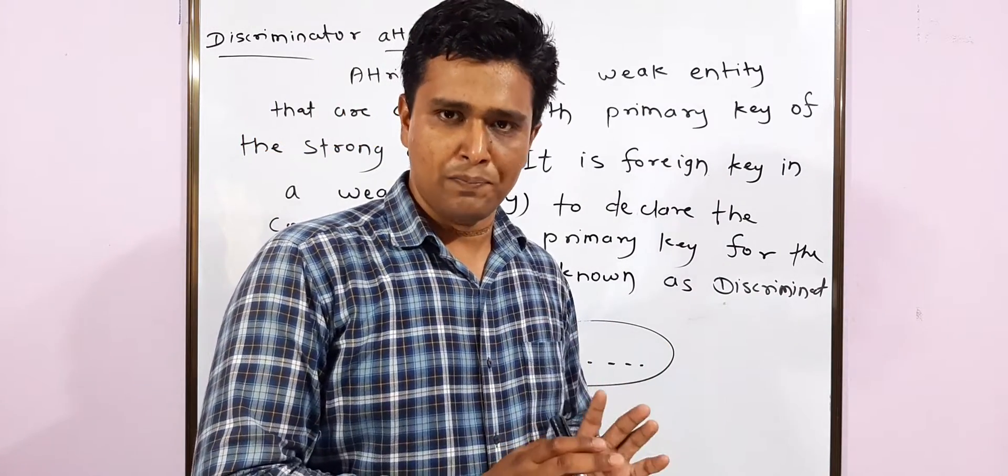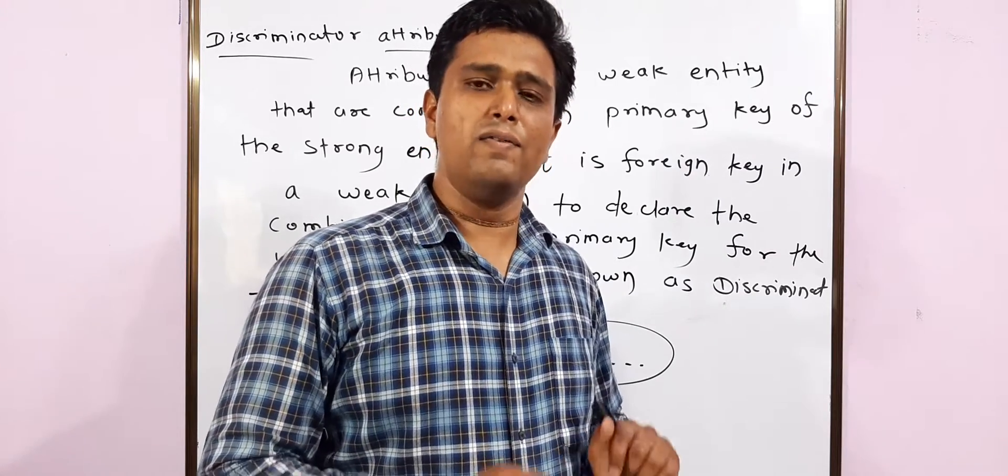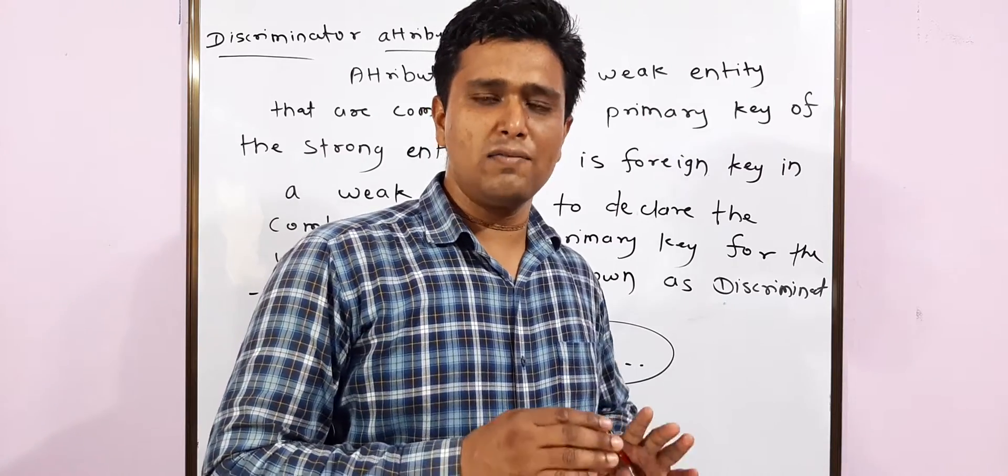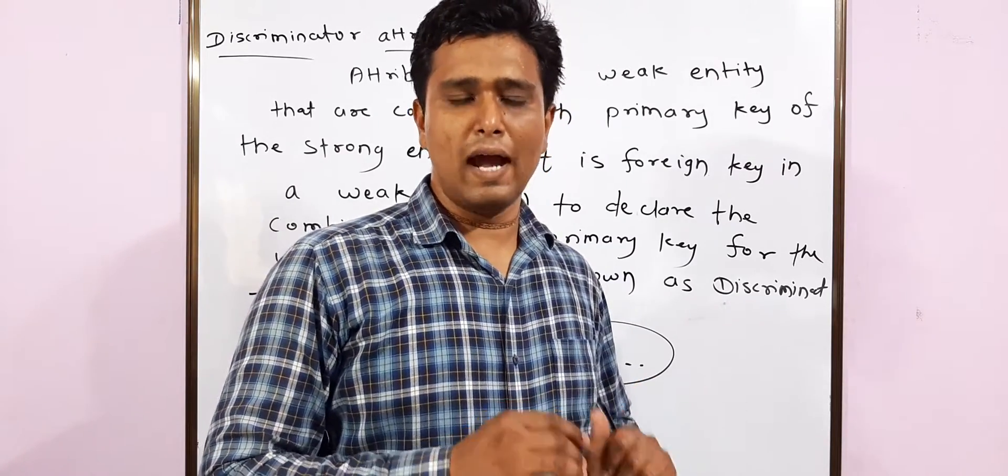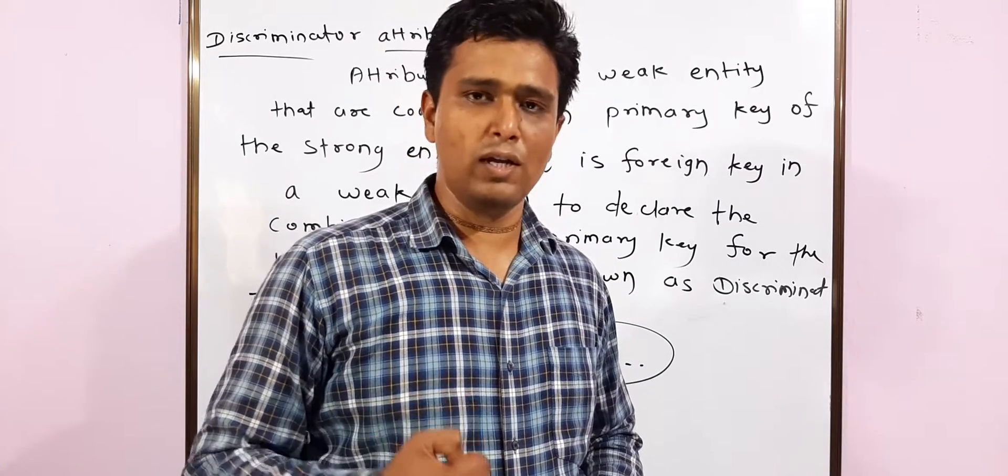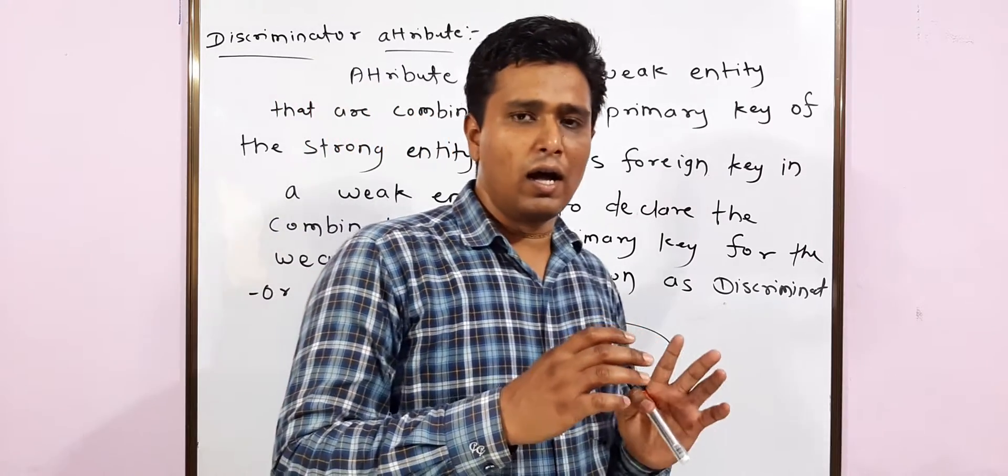In a weak entity, we do not have any primary key. But for any relational database management system, we need to be in 1NF, 2NF. At least in 1NF we need to have a primary key or an attribute which will uniquely define the row in the table.